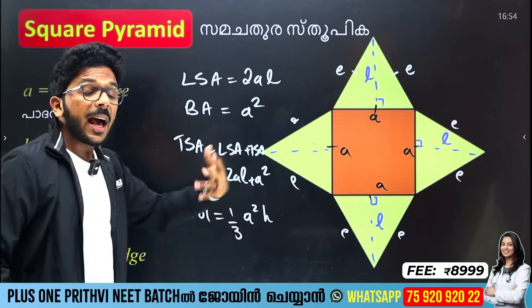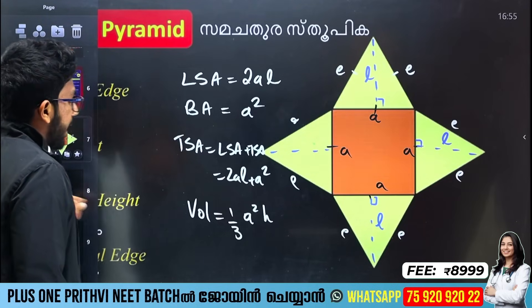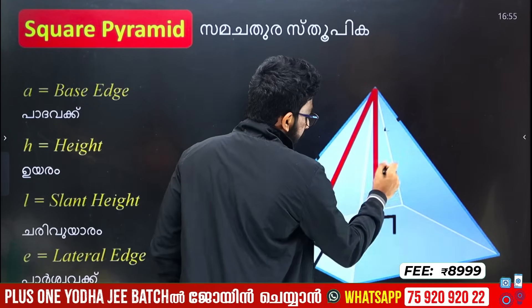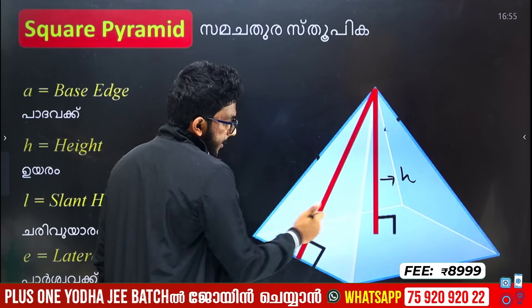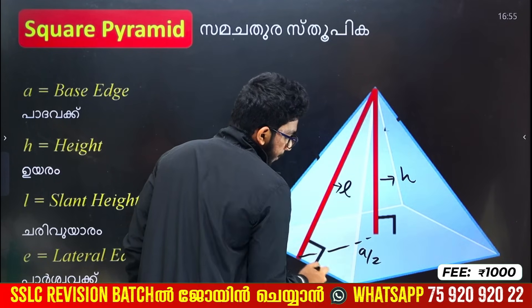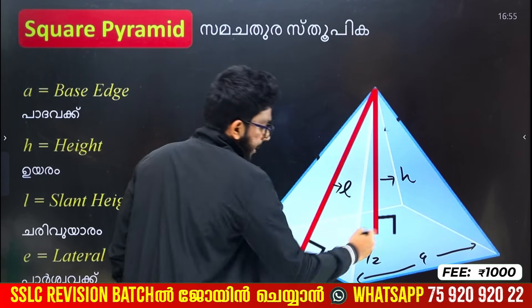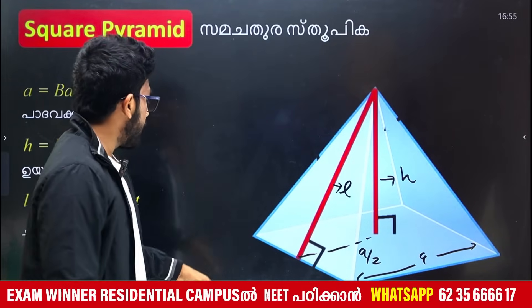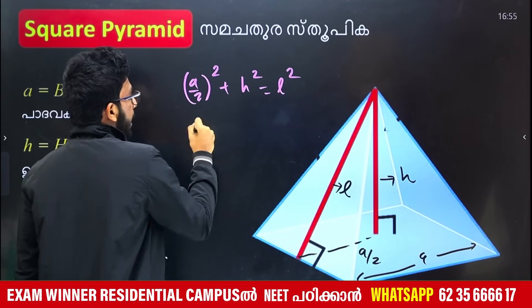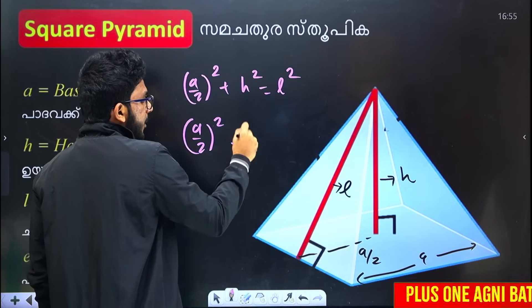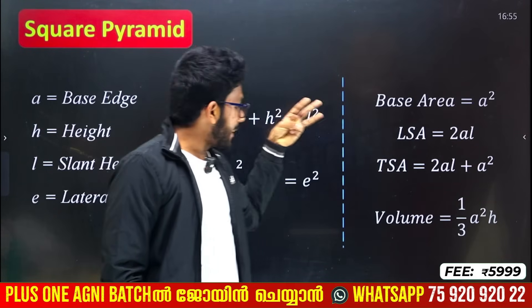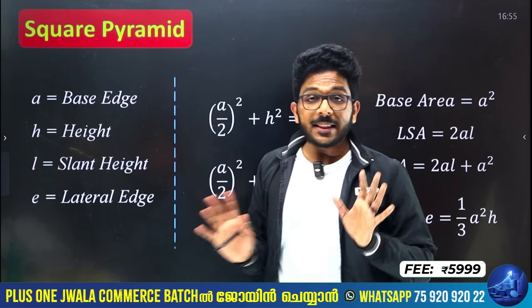Then, how do you find the slant height? This height is L. This is A by 2. The formula is: (a/2)² + h² = l². That's why (a/2)² + h² = l². This is the formula for all — base area, LSA, TSA — in the square pyramid. Now we have two questions in the square pyramid.